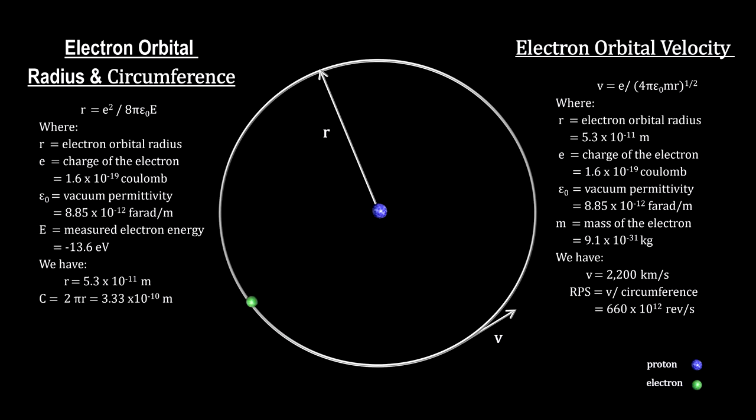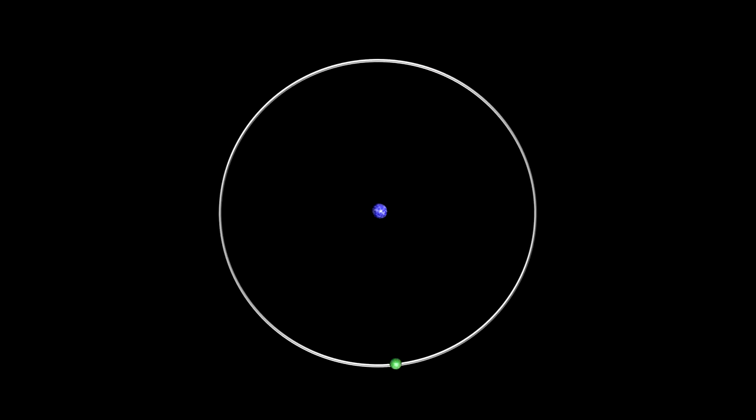Now think about that for a second. But classical electromagnetic theory points out that an accelerating charge radiates energy. Theoretically, the electron should collapse into the nucleus in less than a trillionth of a second. And yet, we see that it does not collapse.